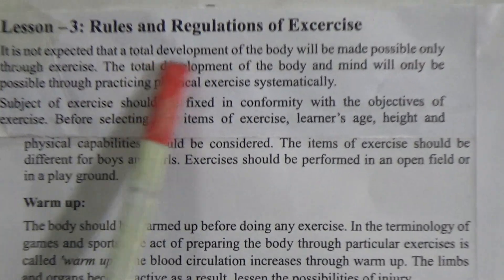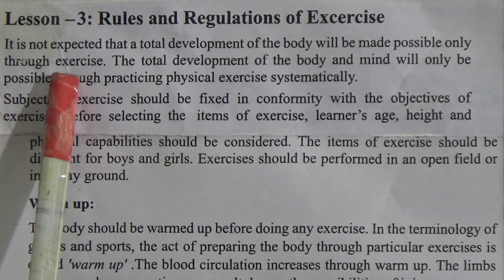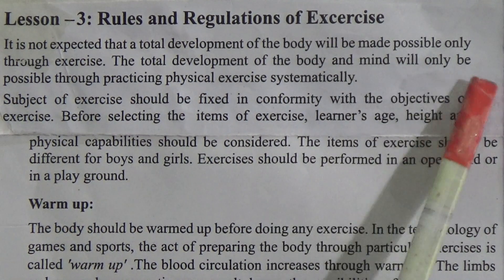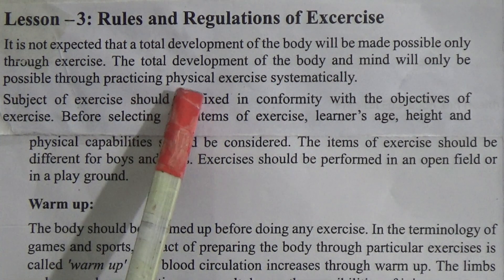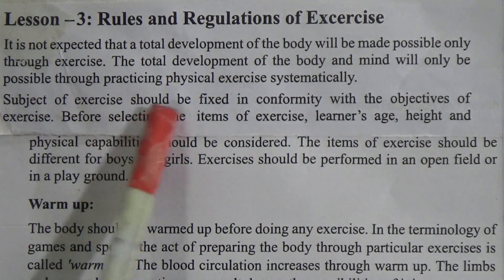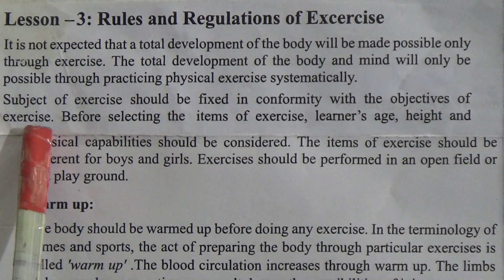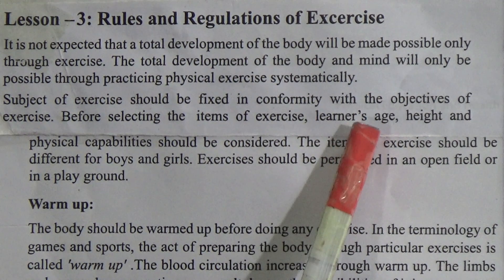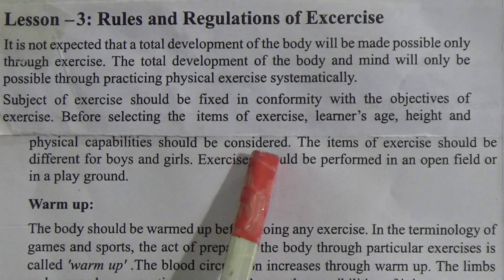It is not expected that a total development of the body will be made possible only through exercise. The total development of the body and mind will only be possible through practicing physical exercise systematically. The subject of exercise should be fixed in conformity with the objectives of exercise. Before selecting the items of exercise, the learner's age, height, and physical capabilities should be considered.